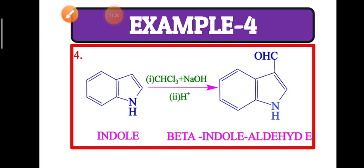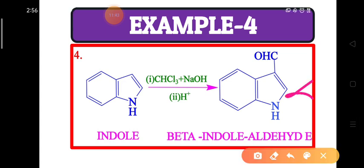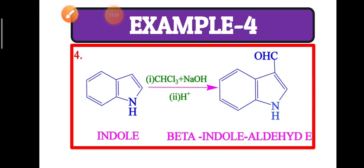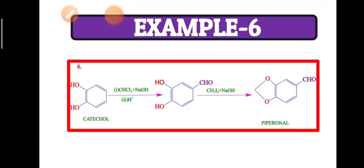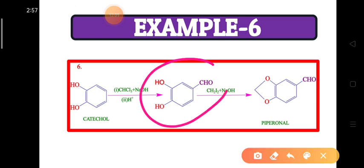Indole also undergoes the Reimer-Tiemann reaction and forms beta-indolecarbaldehyde — the alpha position and beta position are noted, which is why it is called beta-indolecarbaldehyde. 2-Naphthol also undergoes Reimer-Tiemann reaction and forms the aldehyde. Catechol also undergoes Reimer-Tiemann reaction and forms the aldehyde.